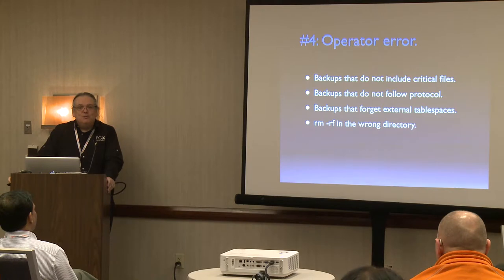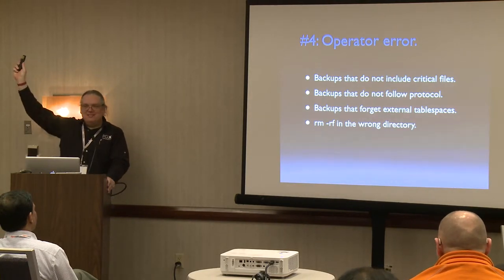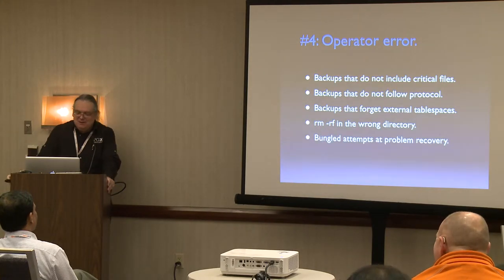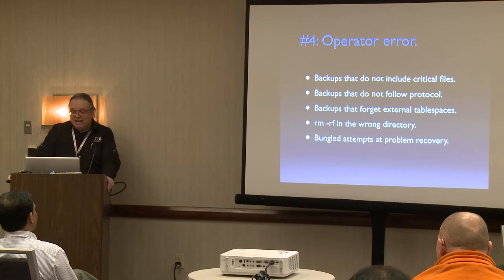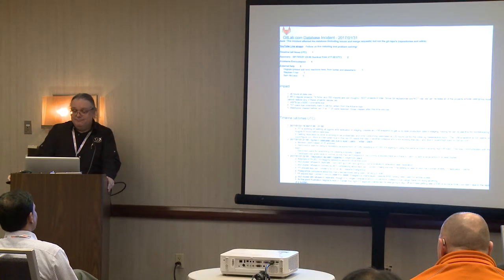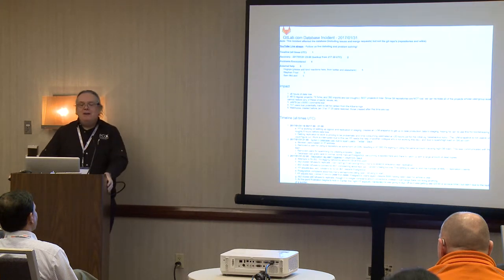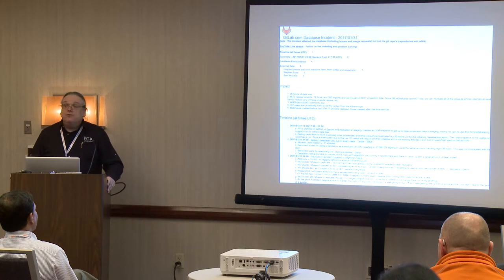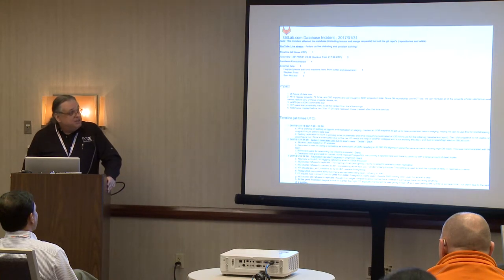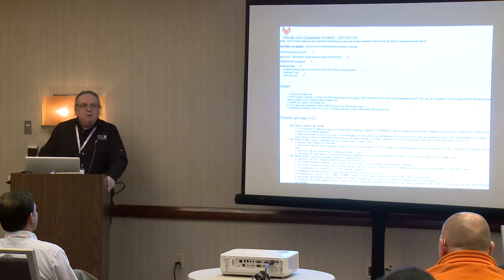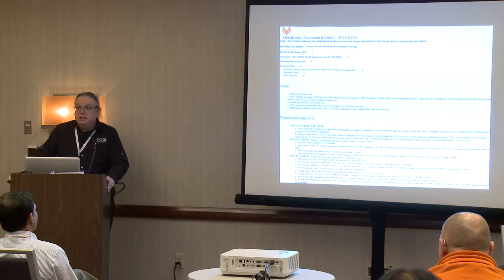Or you type rm -rf in the wrong directory — who's done that? Come on, be honest. Or it was an easy problem but it was three in the morning with no coffee, and bad things start to happen — like deleting the wrong files to free space. Like the GitLab incident, where they copied the bad secondary over the good primary. They were very honest and transparent about what happened. It was an unfortunate situation that turned into a disaster because they were sleepy, had been fighting the problem a long time, and did the wrong thing. It happens to us all.